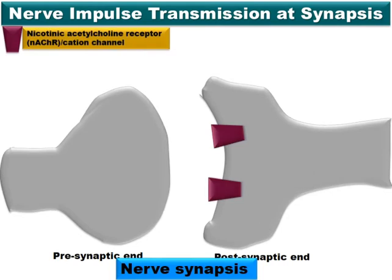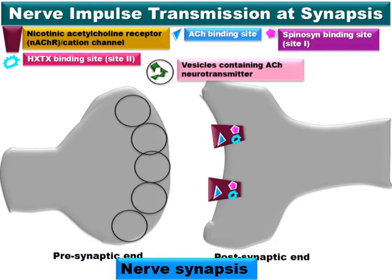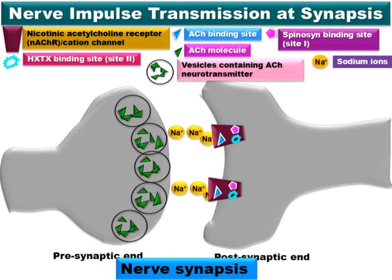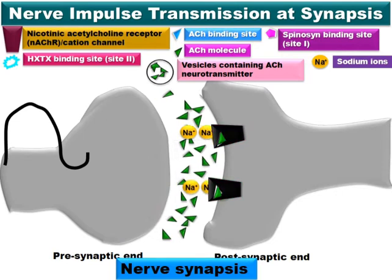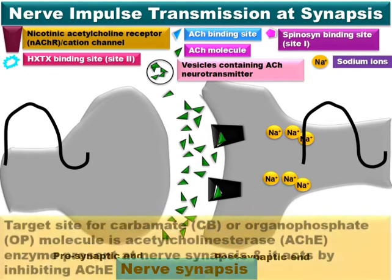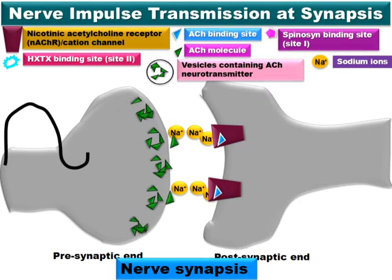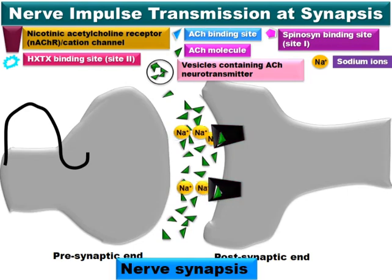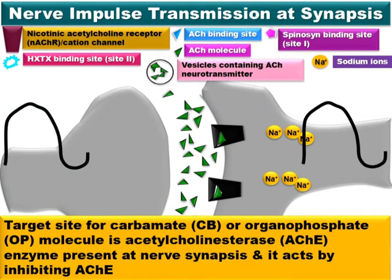Carbamates and organophosphates belong to subgroups 1A and 1B respectively of Group 1 in the Insecticide Resistance Action Committee (IRAC) classification. Some examples of carbamate insecticides are benfuracarb, carbofuran, carbosulfan, fenobucarb, methomyl, and thiodicarb. Some examples of organophosphate insecticides are acephate, chlorpyrifos, dimethoate, malathion, monocrotophos, oxidemeton-methyl, phosalone, phenthoate, and quinalphos.